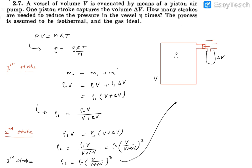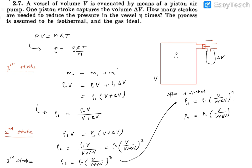So we can generalize: after n strokes, the density is ρn = ρ0·[V / (V + delta V)]^n. Since pressure and density are directly proportional, the pressure after n strokes is Pn = P0·[V / (V + delta V)]^n.